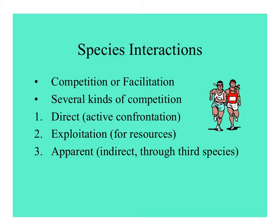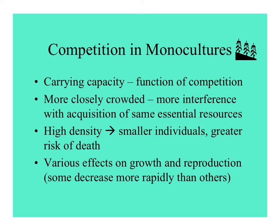Probably the two most common kinds are exploitation for resources and apparent competition in the plant world. A monoculture of plants shows competition — even if it's not there initially when plants are small — as they get bigger, they start using resources available to the others. The carrying capacity of any habitat is therefore a function of competition.